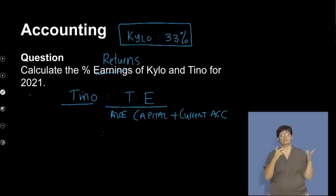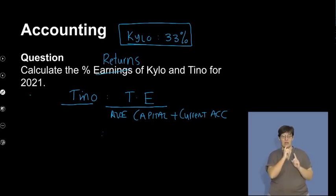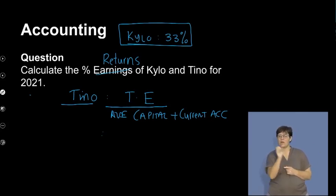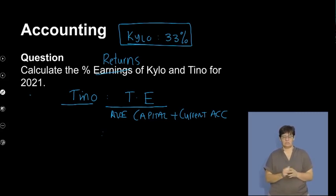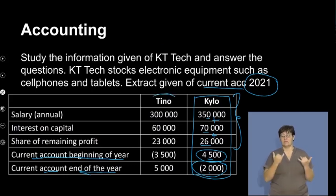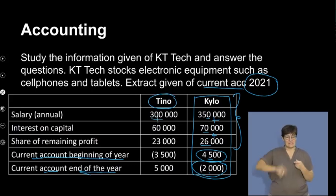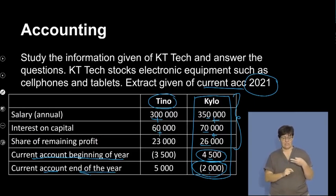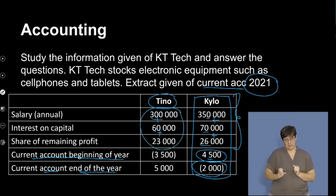What I've done is, because I needed a bit of space for my calculation, as you can see, I filled in my answer at the top. Let's now calculate for Tino what his percentage earnings or percentage return is. We're going to, again, start with total earnings. Let's go back to the information. Now we're focusing on Tino, and his percentage earnings will be his salary, plus interest on capital, plus his share of the remaining profit. Let's get our calculator out.